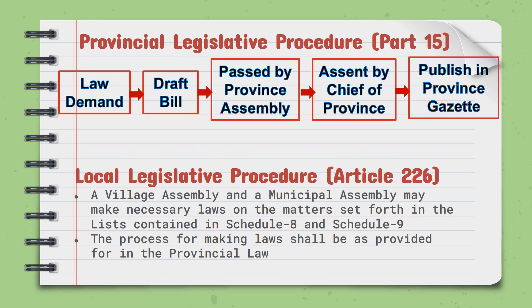Let's talk about the provincial legislative procedure. As there is only one house in the province, it is not as complicated as federal legislation. They draft a bill as per the demand of the law. The bill is presented in the provincial assembly, and if the provincial assembly passes the bill, it is sent to the chief of the province for assent and published in the province gazette.